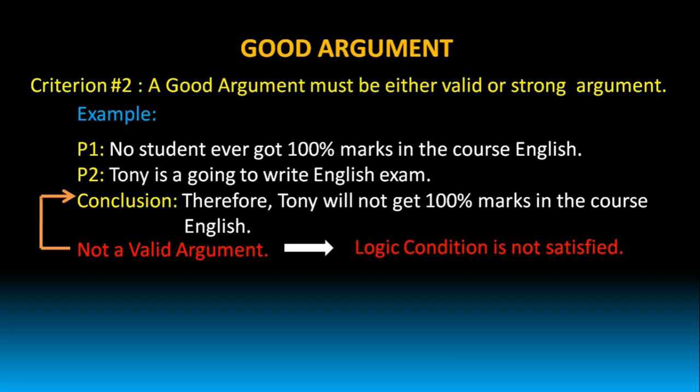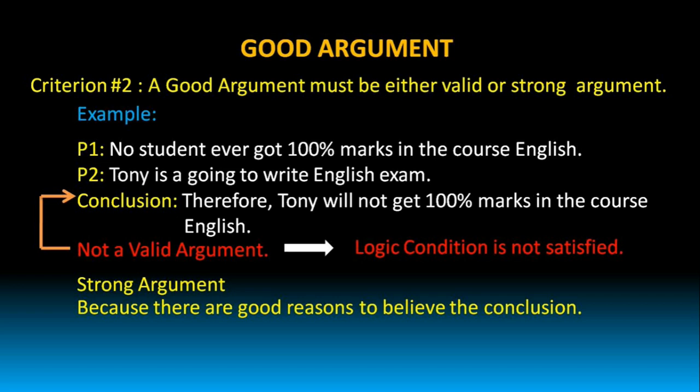Maybe she can create a record — she might be the first one to get 100% marks in the course English. That's why this argument is not a valid argument. But this argument is a strong argument. Why? Because there are good reasons to believe the conclusion. No student ever got 100% marks in the course English, so there is a very high probability that Tony is not going to get 100% marks. Hence, it is a good argument because it is a strong argument. A good argument must be either a valid argument or a strong argument.